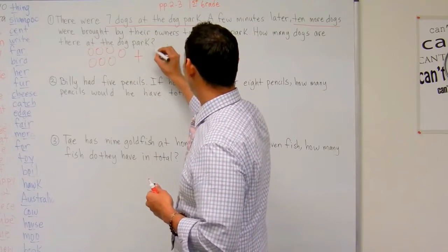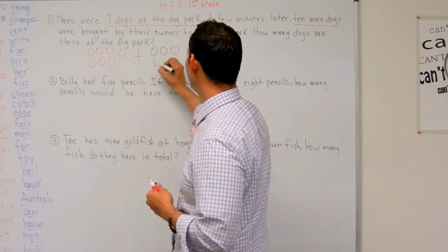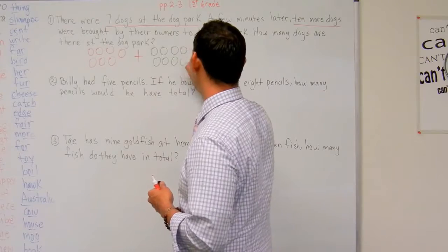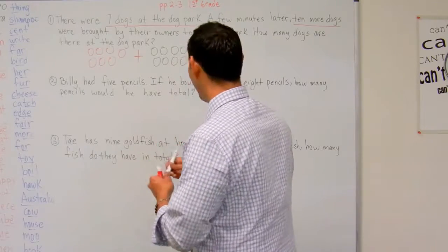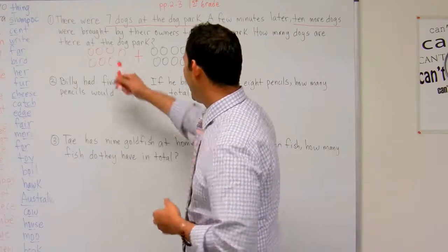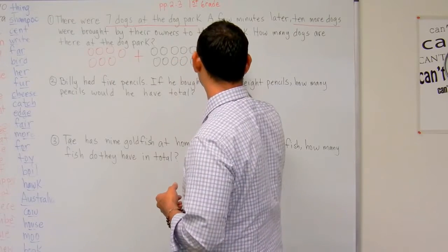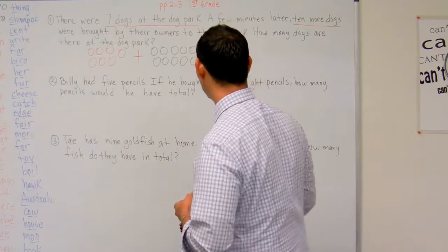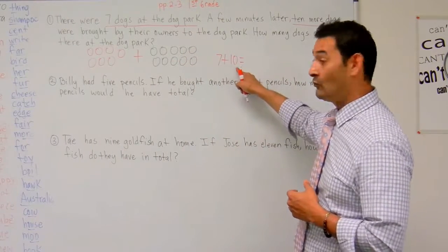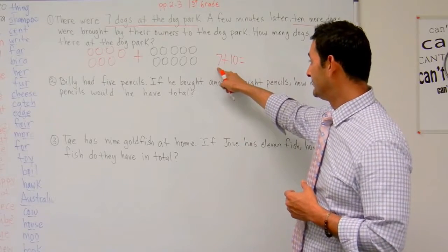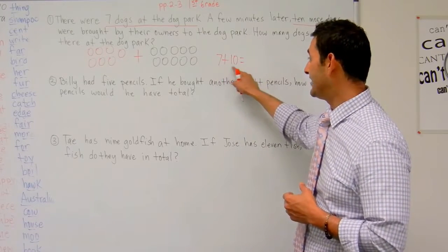Plus, there were 10 more dogs: 1, 2, 3, 4, 5, 6, 7, 8, 9, 10. So now we have 7 plus 10 equals, and when we're adding 10s to 7, we know that that's 17.